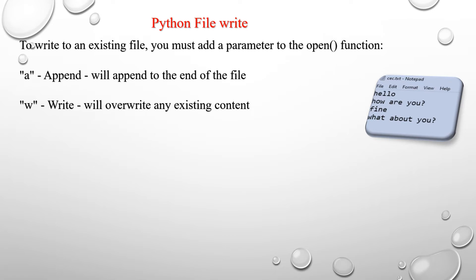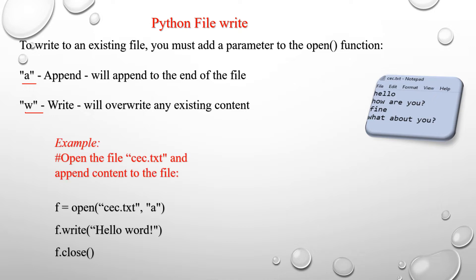If you want to write to an existing file, you must add a parameter to the open function. The open function allows two arguments: the first argument is the file name, and the second argument is the mode. If you specify 'a' (append), it will append content to the end of the file. If you specify 'w' (write), it will overwrite any existing content. For example, open the file cec.txt and append content to it.